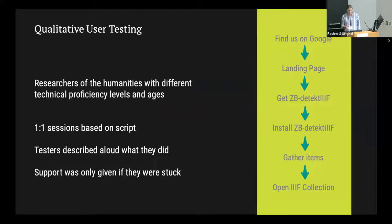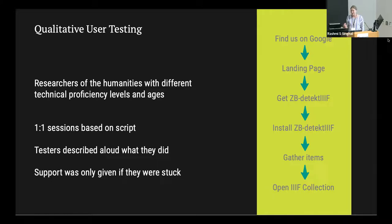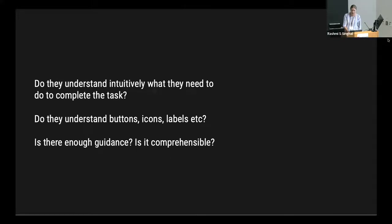We conducted quality user testing. We asked researchers in the humanities with different technical proficiency levels and ages to do the user journey — they were supposed to find us on Google and go through all the steps. These were one-to-one sessions where the participant described out loud what they were doing and named any problems, while we observed. We gave support only if they were really stuck. The underlying questions: do they understand intuitively what they need to do? Do they understand buttons, items, labels? Is there enough guidance and is the guidance comprehensible?